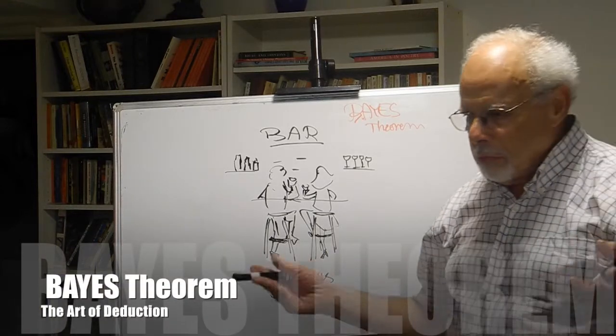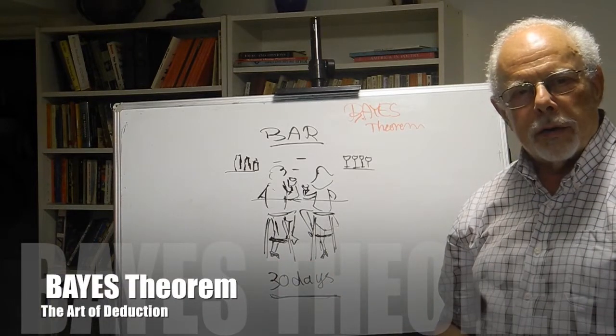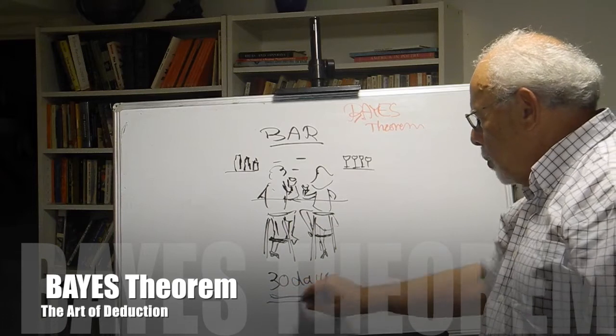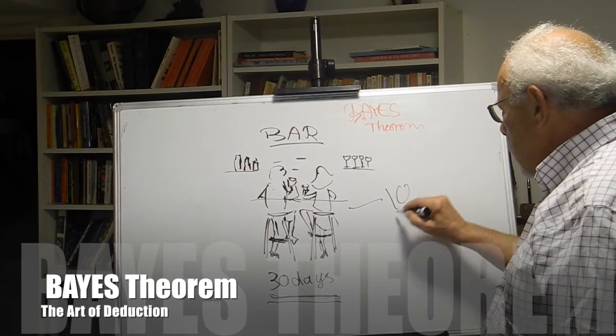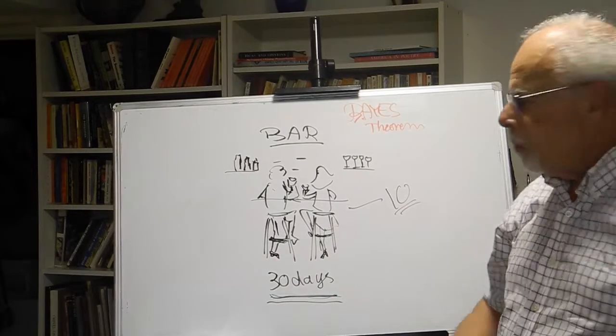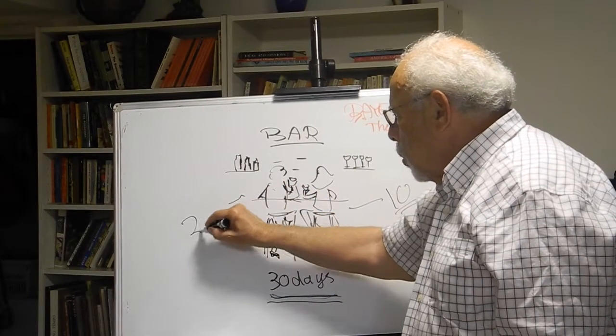Alice and Bob visit the bar. In the last 30 days, Alice came ten times, Bob twenty times.